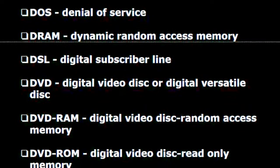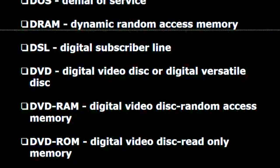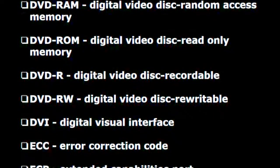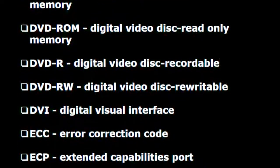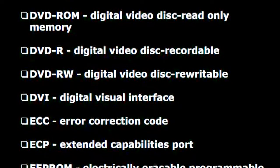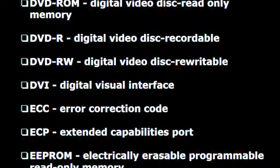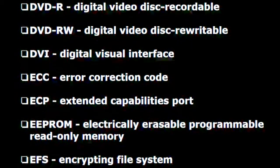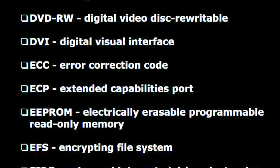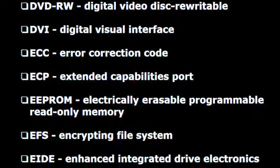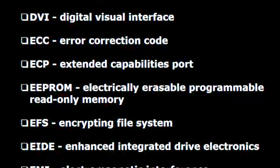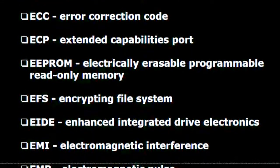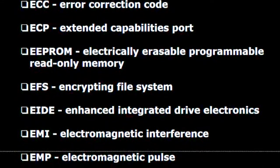D.V.D. — Digital video disk or digital versatile disk. DVD-RAM — Digital video disk random access memory. DVD-ROM — Digital video disk read only memory. DVD-R — Digital video disk recordable. DVD-RW — Digital video disk rewritable. D.V.I. — Digital visual interface. E.C.C. — Error correction code. E.C.P. — Extended capabilities port. EEPROM — Electrically erasable programmable read only memory. E.F.S. — Encrypting file system.